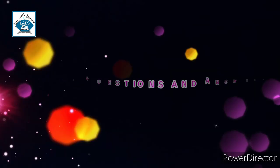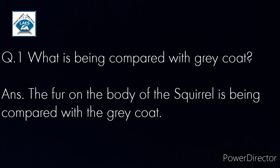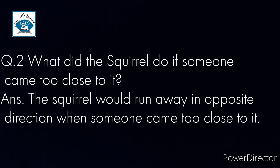Now you also need to write some additional question answers. Question one: What is being compared with the grey coat? Answer: The fur on the body of a squirrel is being compared with a grey coat. Question number two: What did the squirrel do if someone came close to it? Answer: The squirrel would run away in the opposite direction when someone came too close to it.